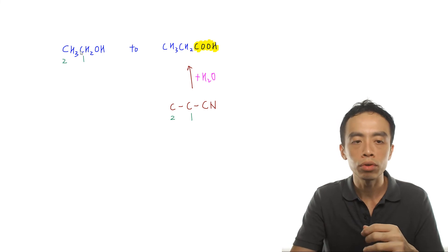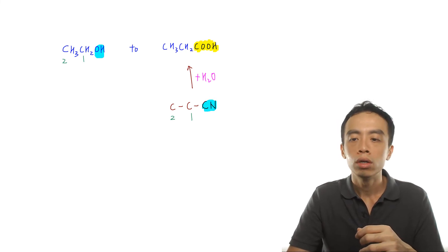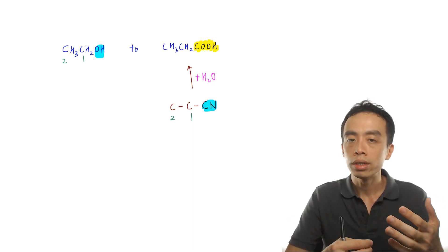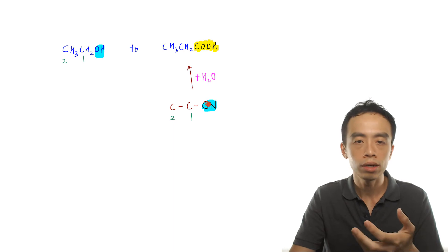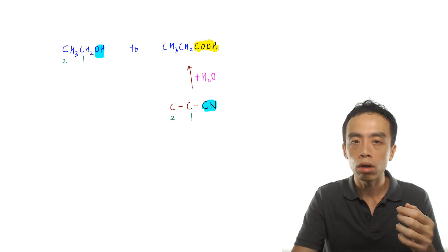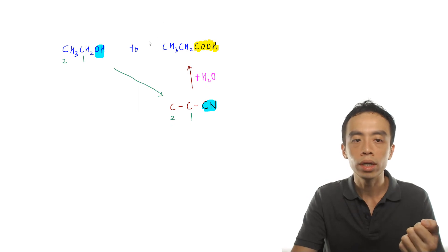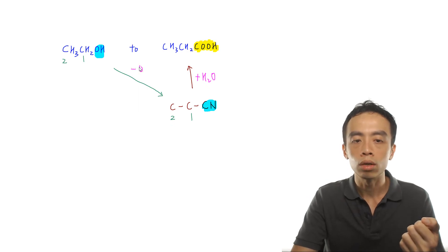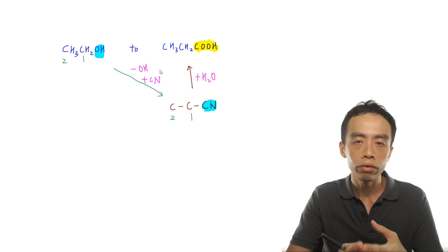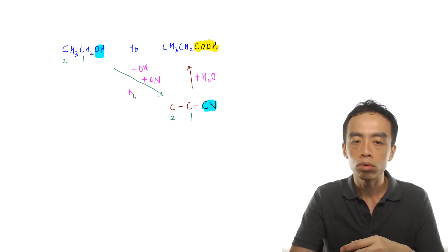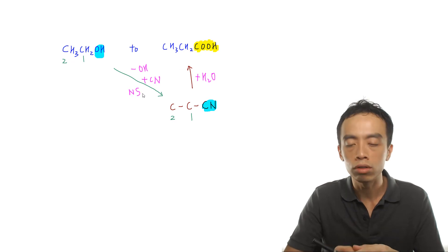In terms of the conversion, what I'm doing is I'm trying to convert this OH group to a nitrile group. So basically what I'm doing is a substitution — I don't want the OH group, I want to replace it with a CN. So in terms of thinking process, if I look at this particular step, I'm removing OH and I want to replace this with a CN. So what type of reaction is this? This is supposed to be a nucleophilic substitution reaction.